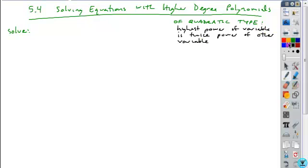So if you have an equation that looks like the following, here's a higher degree polynomial. But when you look at this, is this of quadratic type? Is the highest power double the other power? Yeah.